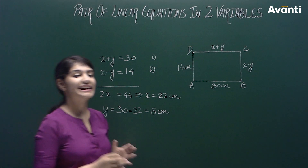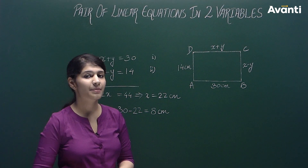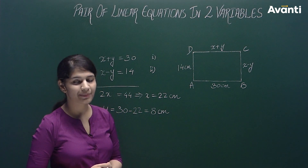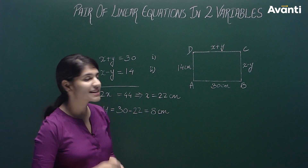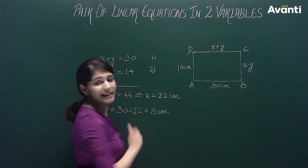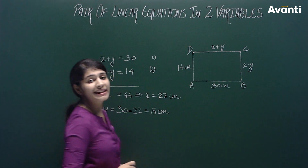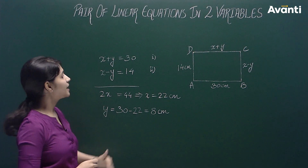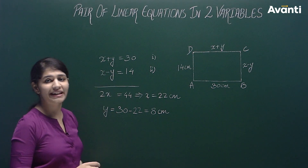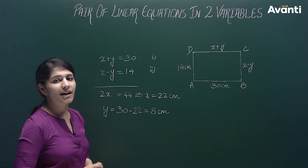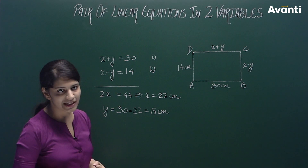In the given question, we have a rectangle. We know that for a rectangle, the length of its opposite sides is equal. This means that x plus y would be equal to 30 cm and x minus y would be equal to 14 cm. Now we have a pair of linear equations in two variables, which we have to solve to find the values of x and y. We can solve this either by substitution, elimination, or cross multiplication method.